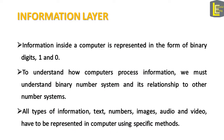Information inside a computer is represented in the form of binary numbers — that is, digits 1 and 0. To understand how computers process information, we must understand the binary number system and its relationship to other number systems. All types of information — text, numbers, images, audio, and video — have to be represented in a computer using specific methods. All this information is converted to binary numbers, that is, streams of bits: zeros and ones, or binary digits.